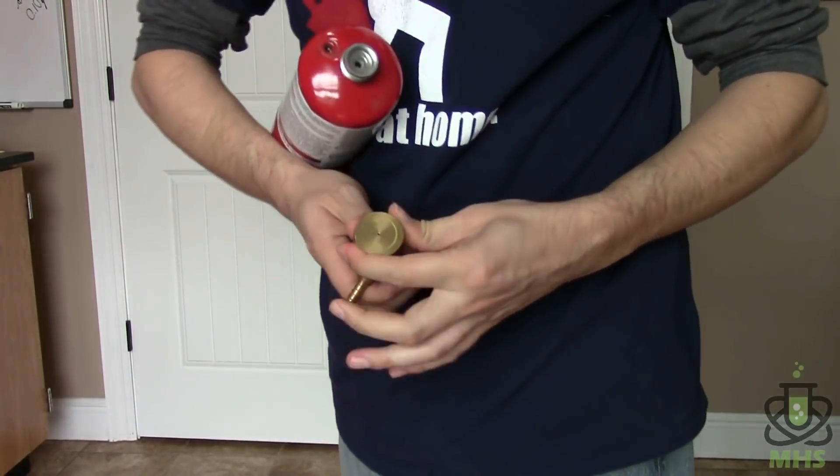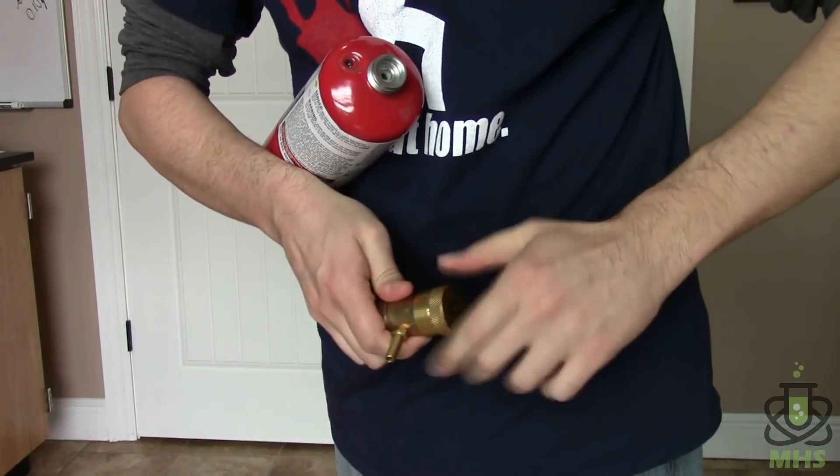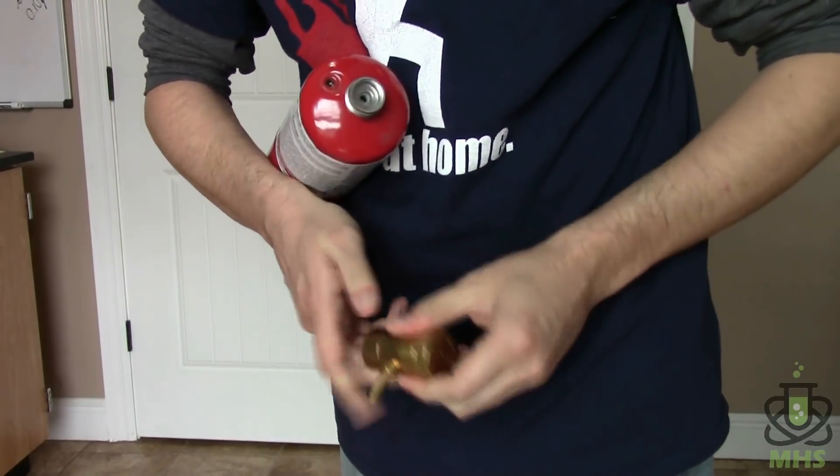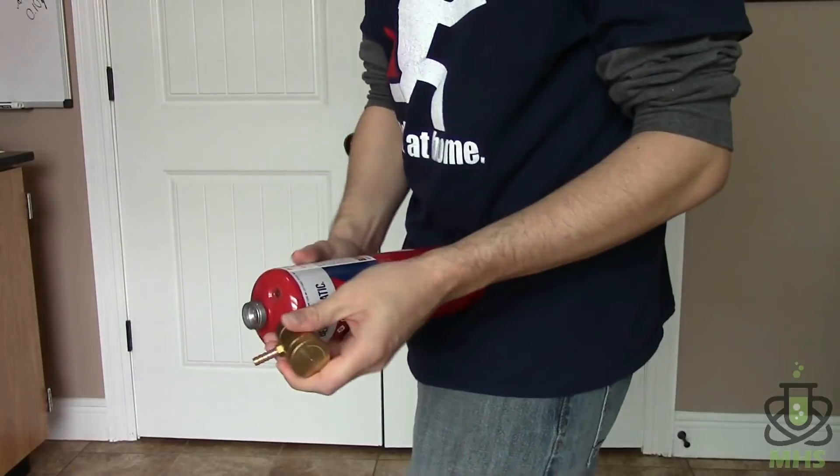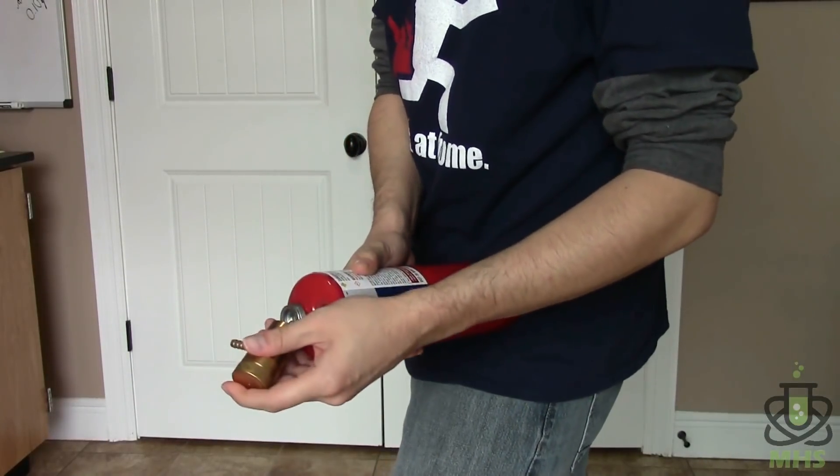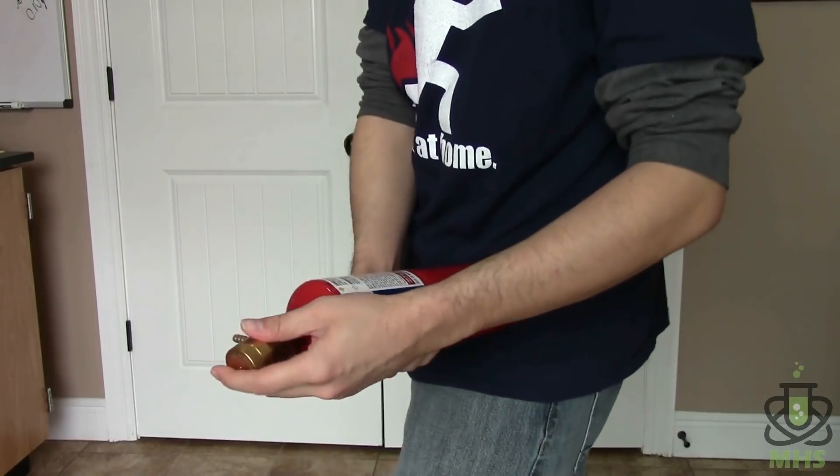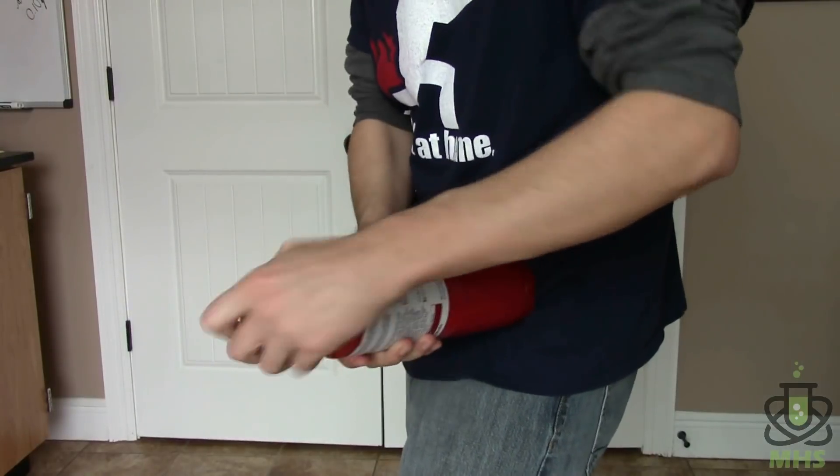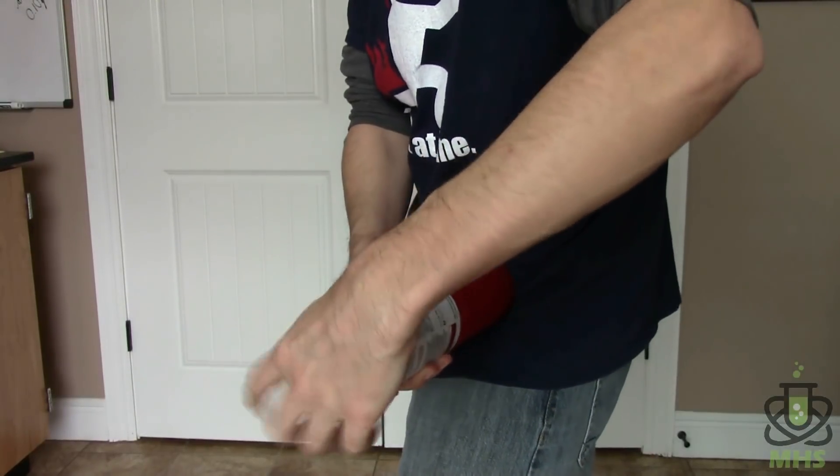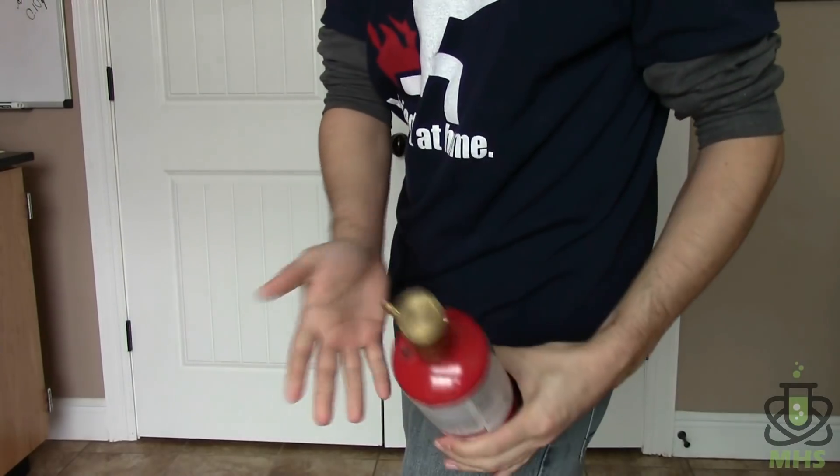But the other trick is you want to open this valve before you put it on there and that releases some of the pressure and makes it easier to do. So you want to prop it up against you, put this on there and then turn the whole bottle left and there you go.